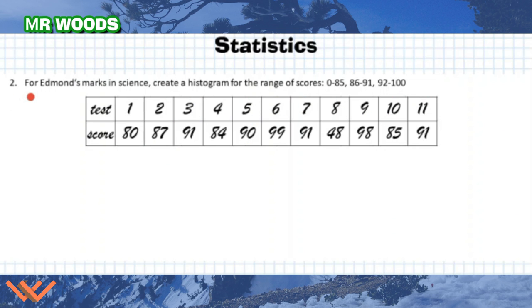Number 2. For Edmund's marks in science, create a histogram for the range of scores. Zero to 85, 86 to 91, 92 to 100. Basically it kind of looks like a bar graph. So what I want to do is I want to create this here. And I'm going to add my ranges. So zero to 85. Okay. And then I have 86 to 91. And then I have 92 to 100.